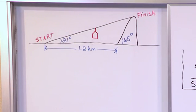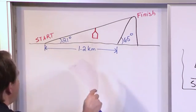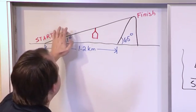A lot of students will look at this and have no idea where to start because it just looks complicated. It's a mountain, it's slanted, there's angles everywhere. How do we find this?